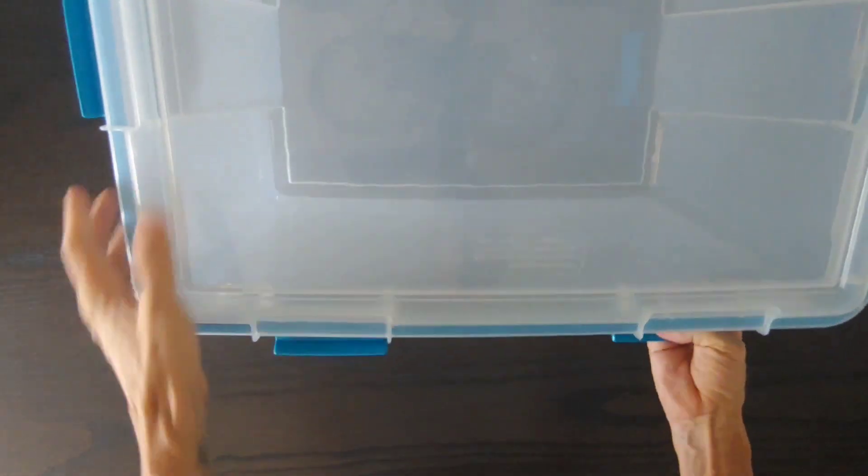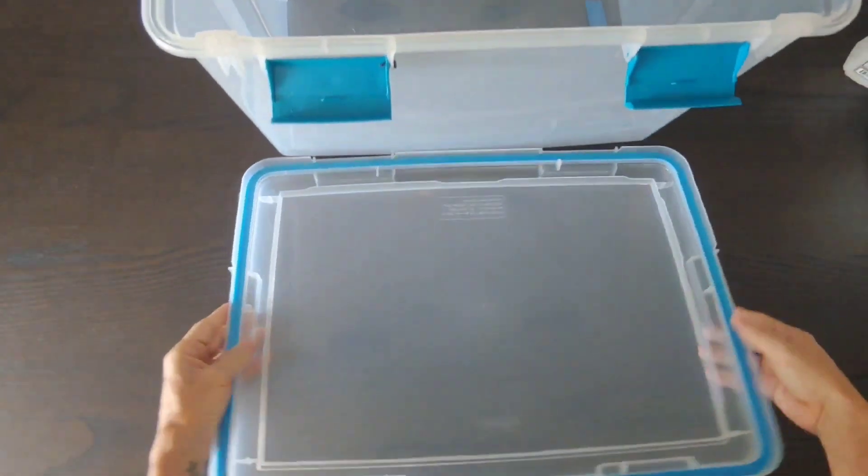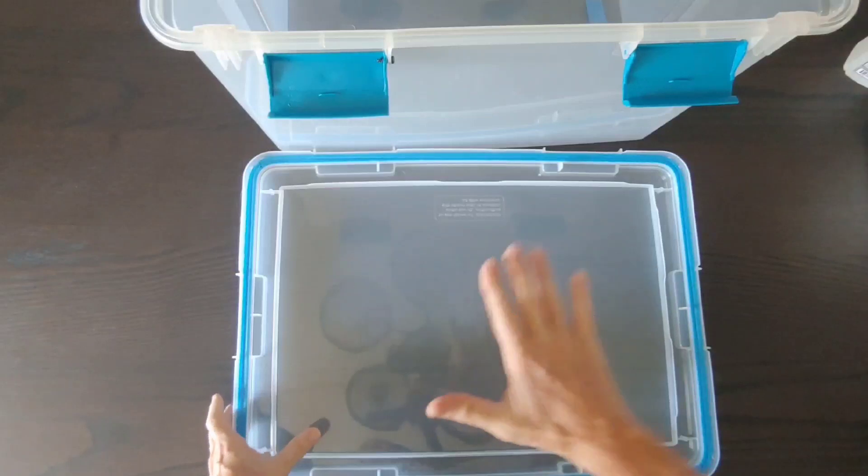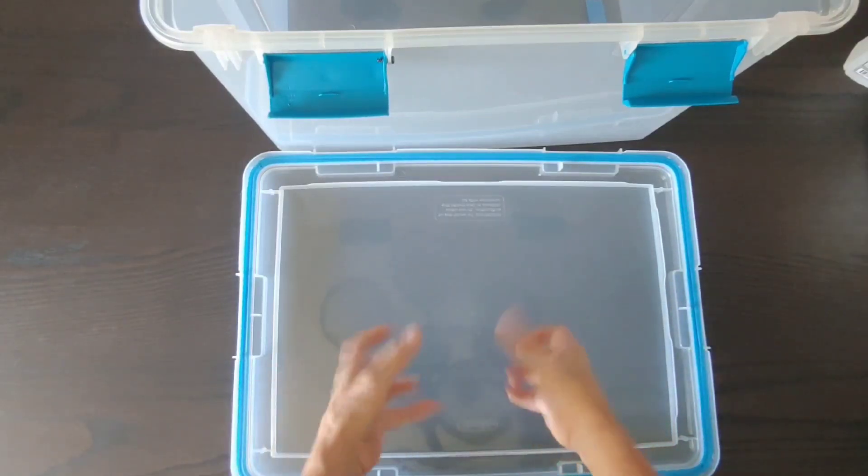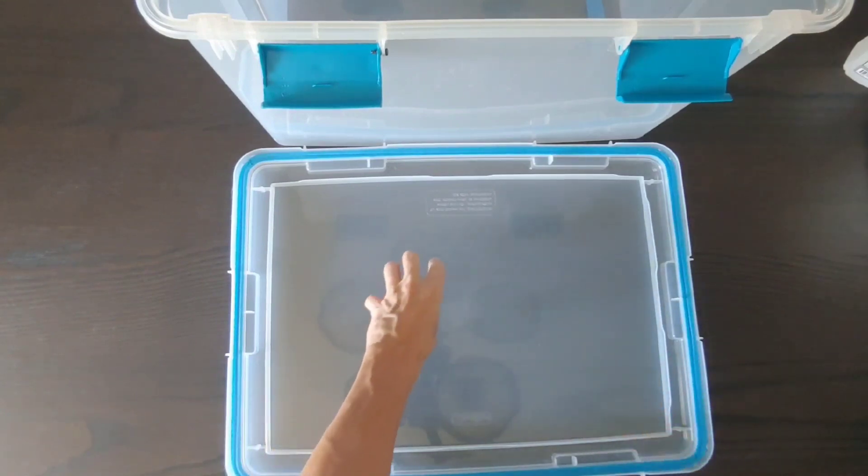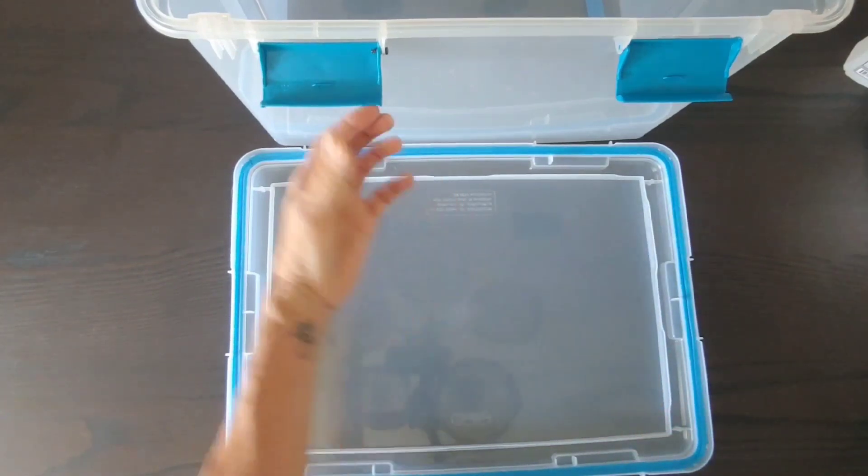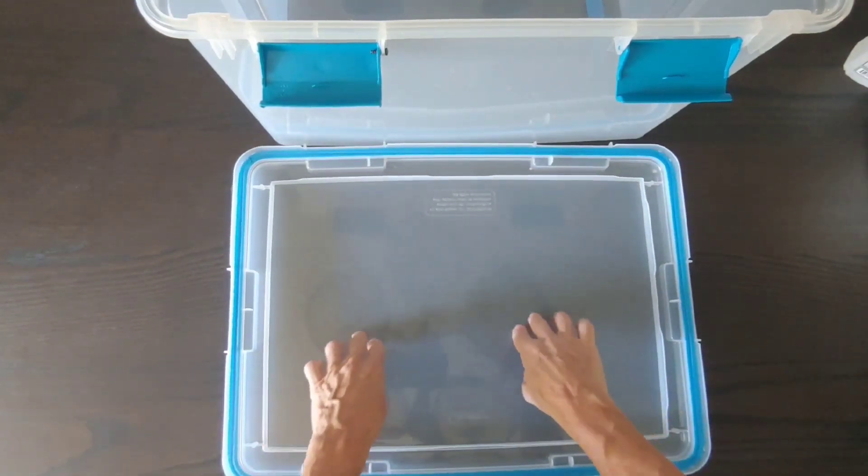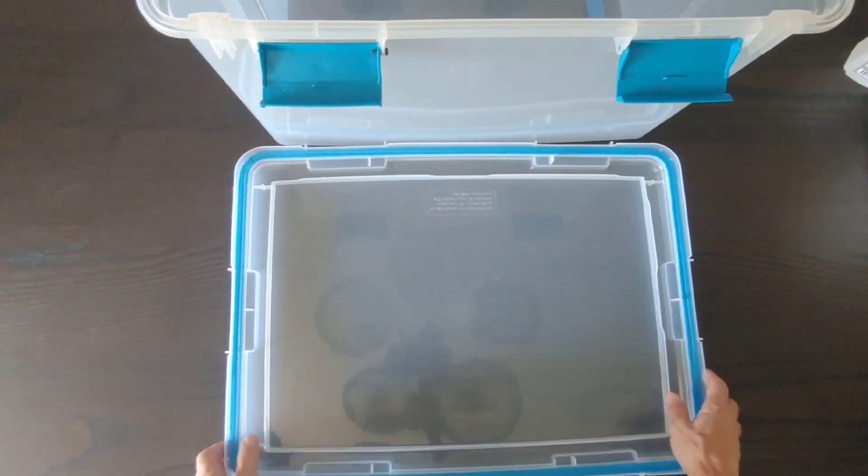If you get one that's too flimsy, when you put this upside down, anything you do makes it flex and it'll literally make your stuff jump. Last thing you want is for an agar cup to jump up and land. So this one is strong.